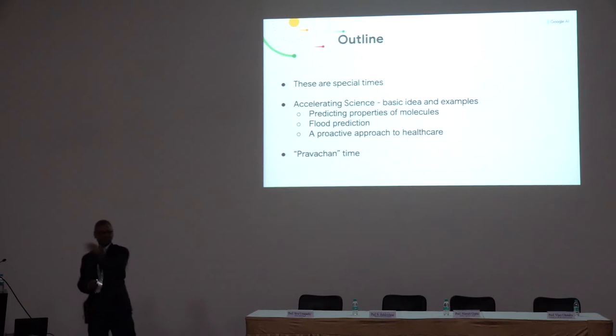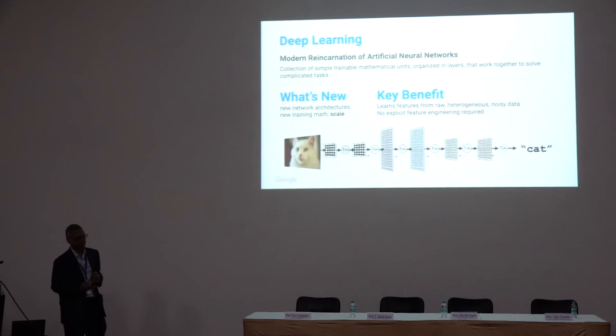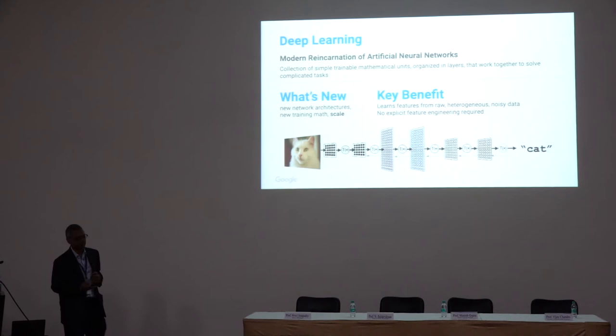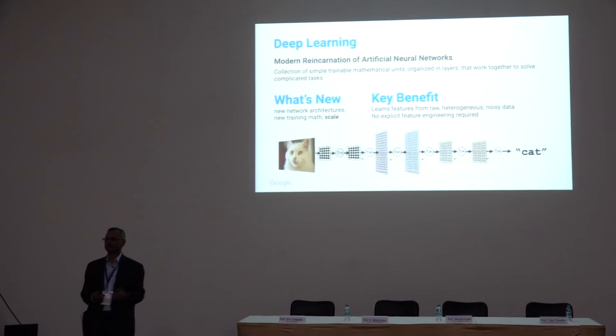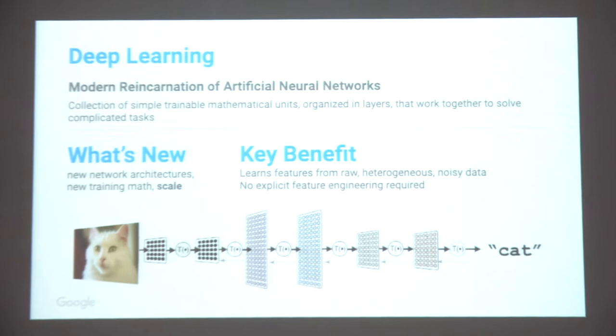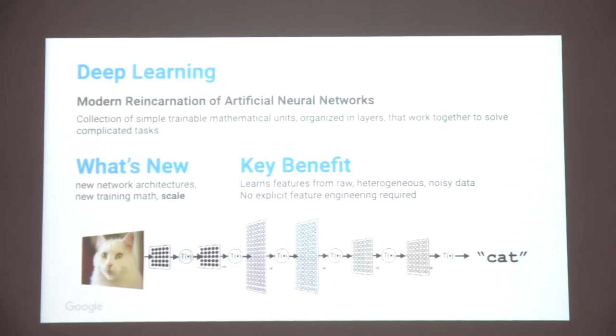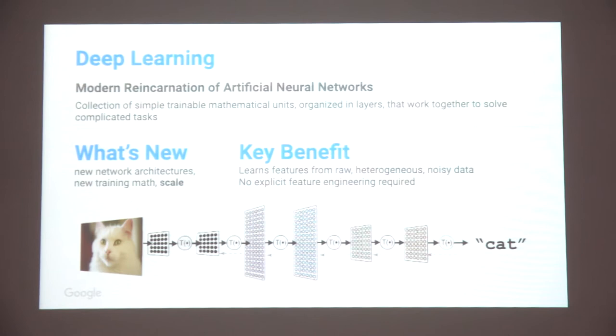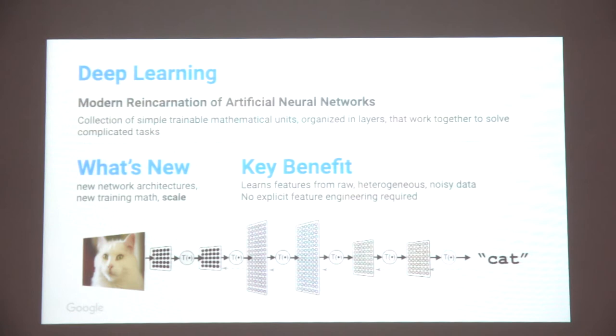I've already talked about this — we are in very special times with the exponential doubling of compute power. That has led to old ideas coming back in a very strong manner. Deep learning, as you probably know, is nothing but a modern day reincarnation of artificial neural networks. These are very simple mathematical units: you have some input, multiply it with some weight, add some constant, take out the output, and organize these simple units in layers.